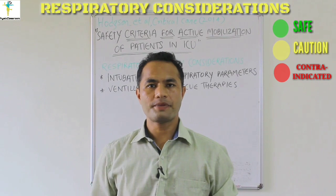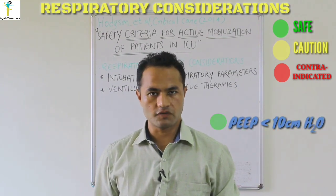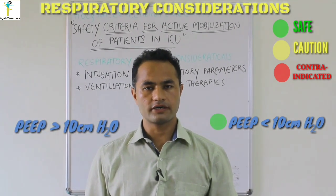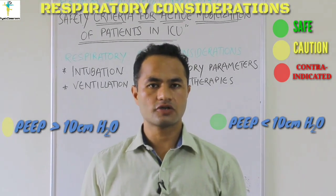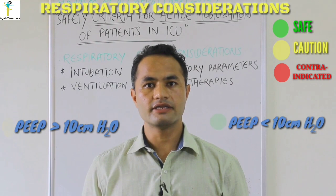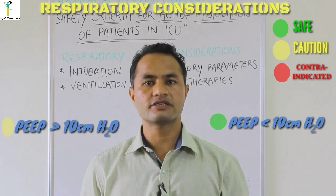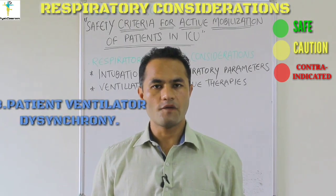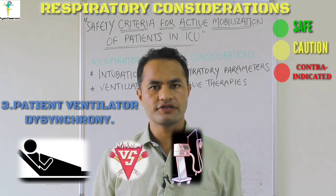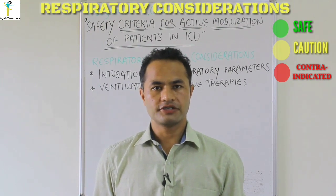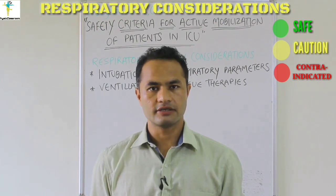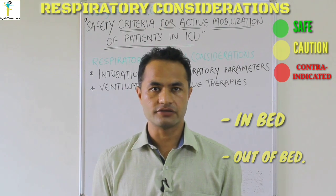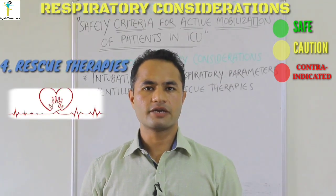The second ventilation consideration is positive end-expiratory pressure or PEEP. It causes an increase in intrathoracic pressure that may cause orthostatic or exercise-induced hypotension. Patients receiving PEEP less than 10 centimeters of water can be mobilized safely, whereas those receiving PEEP higher than 10 centimeters of water should be mobilized under sufficient medical supervision by an experienced physiotherapist. Third is ventilator dyssynchrony, also called patient-ventilator fighting; mobilizing such patients may further add to the dyssynchrony and should be done under sufficient medical supervision.